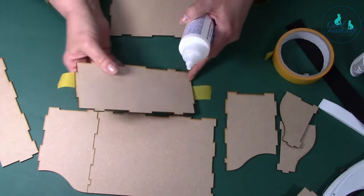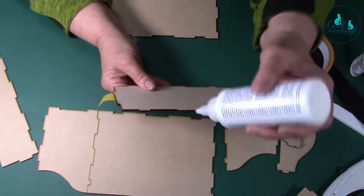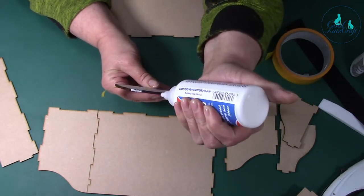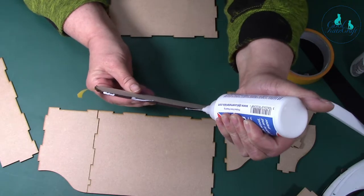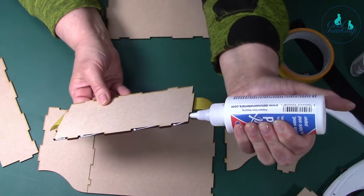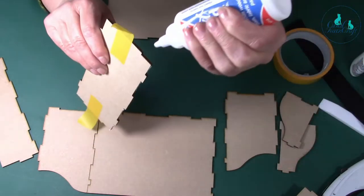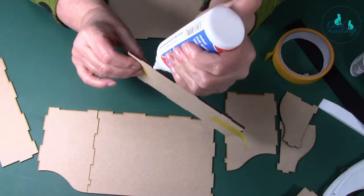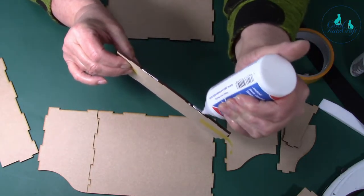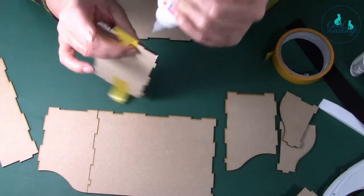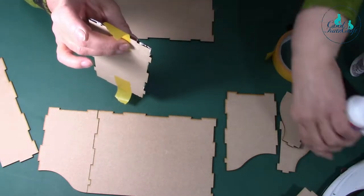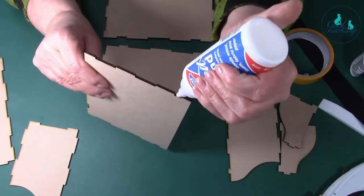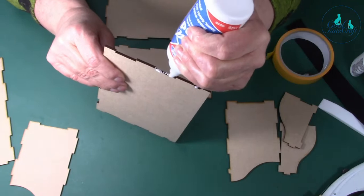I'm using our speed bond glue which only takes five minutes to set, and it's brilliant stuff. It comes in a little nozzle thing that you just twist open and give it a squeeze. I tend to put all the glue on first, and because it's speed bond, I do need to get a bit of a shift on.